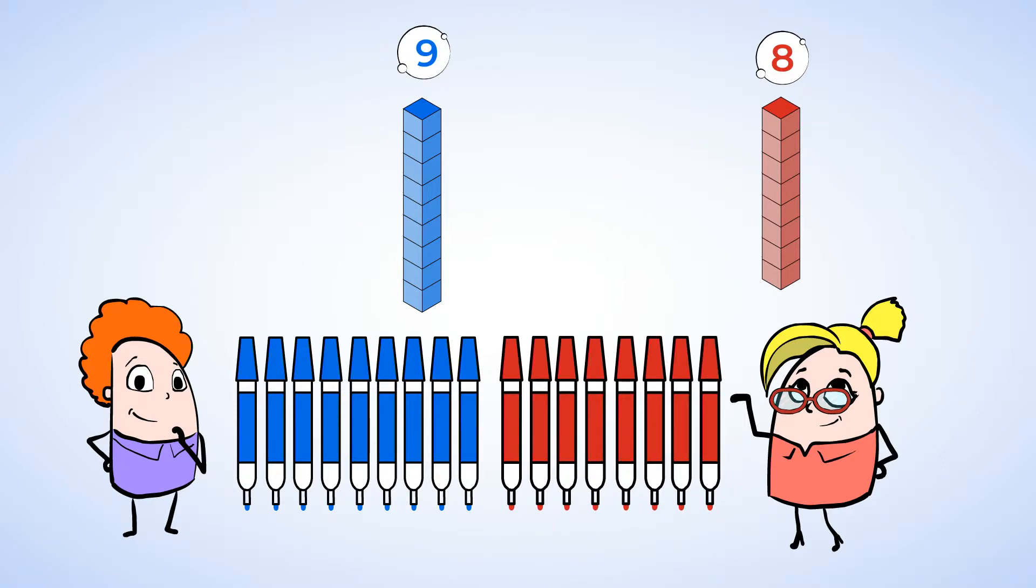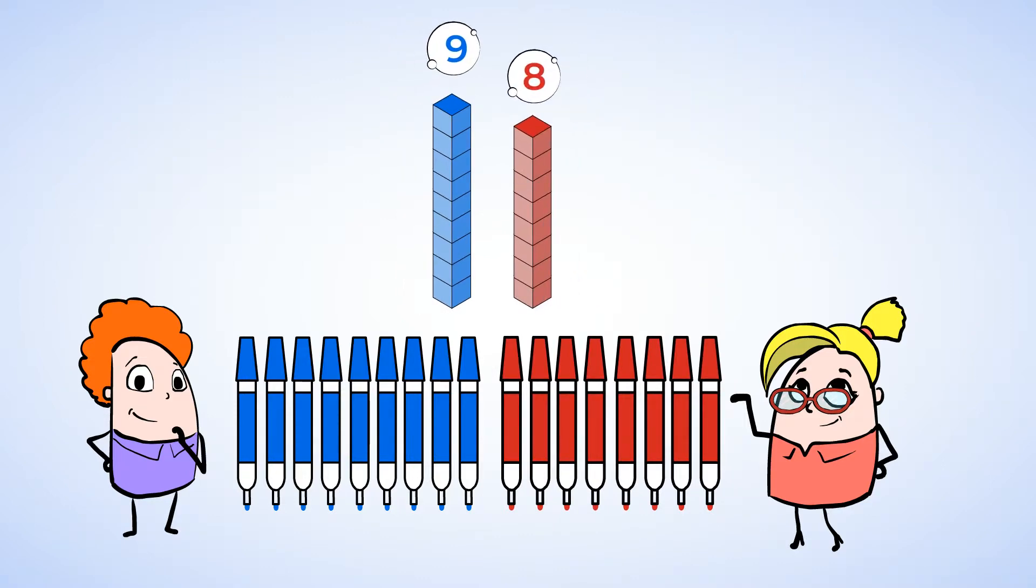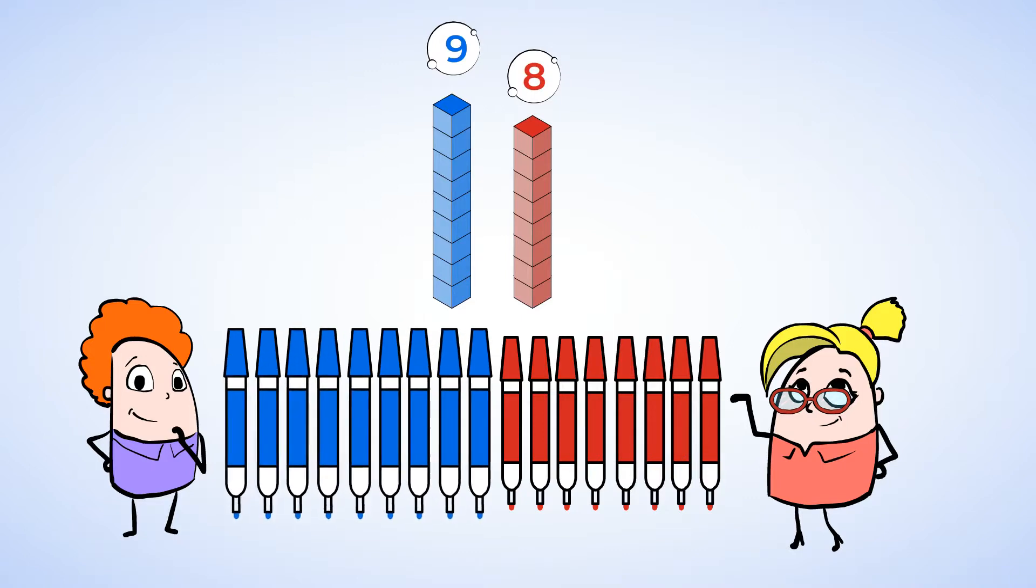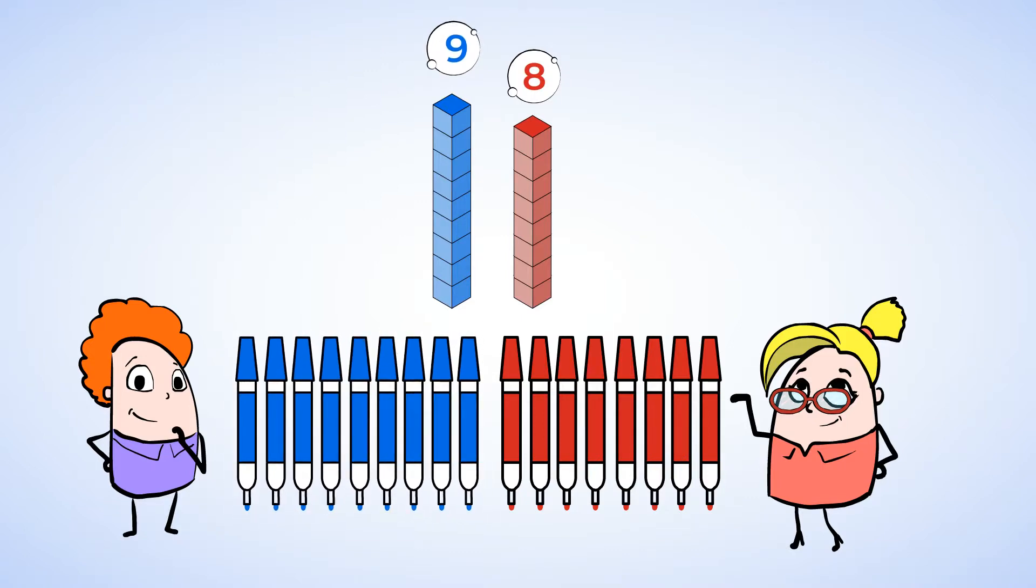Now let's put these mighty towers next to each other. Is Eric's tower taller or shorter than Jenny's? It's taller. So Eric has more markers than Jenny. Nine markers is more than eight markers. So nine is greater than eight. Great job.